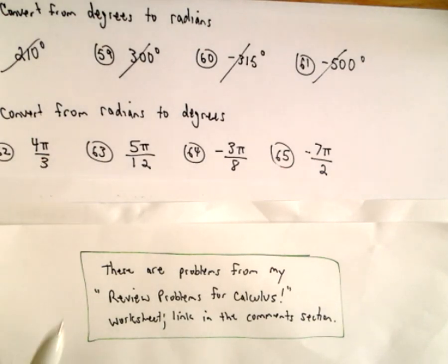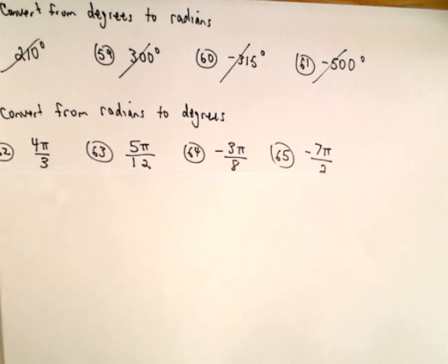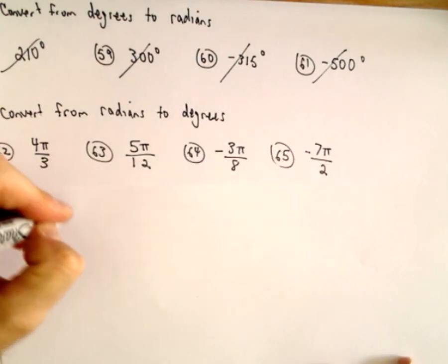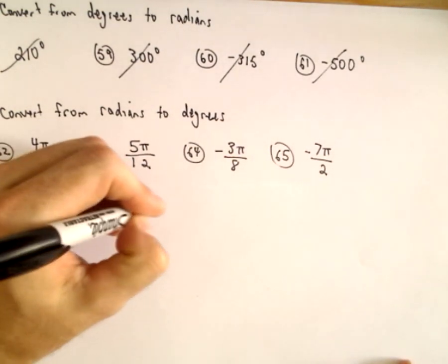Here we're just going to convert from degrees to radians in these four examples. We discussed in the previous video that pi radians was equal to 180 degrees.